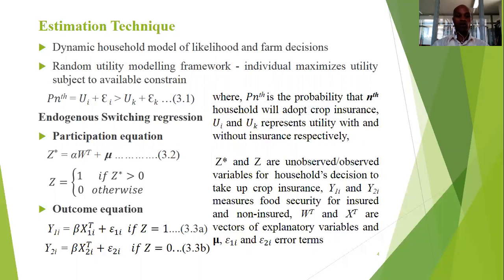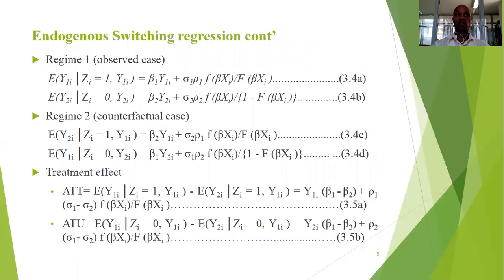The outcome is to find the expected household food insecurity index for non-insured households if they had insured, and for insured households if they had not insured.